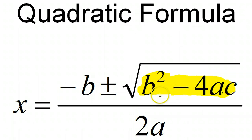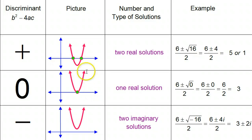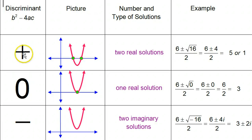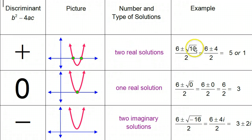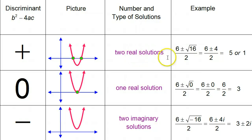The discriminant tells you at a glance how many solutions you have and whether they're real or imaginary. The discriminant b squared minus 4ac will be either positive, zero, or negative. If it's positive — the most common case — you're dealing with a parabola that intersects the x-axis twice, so there are two real solutions. For example, if the discriminant is 16, you'd have negative b plus or minus 4 — giving two different real answers like 5 or 1.